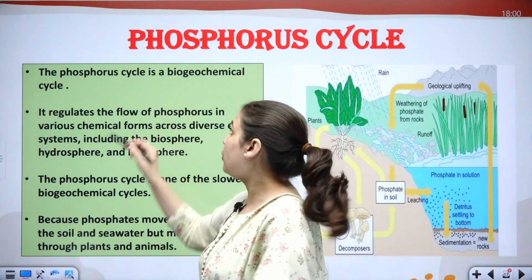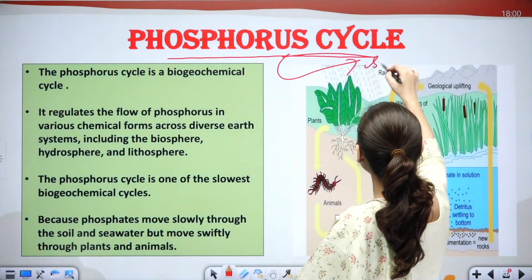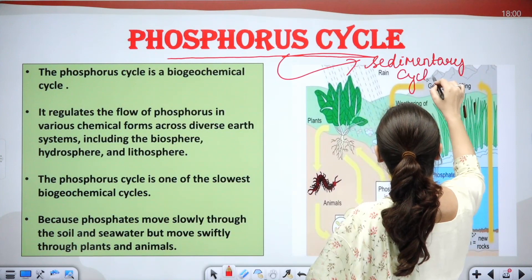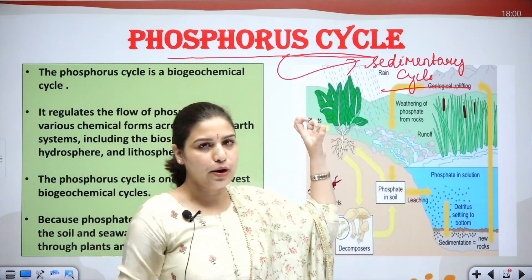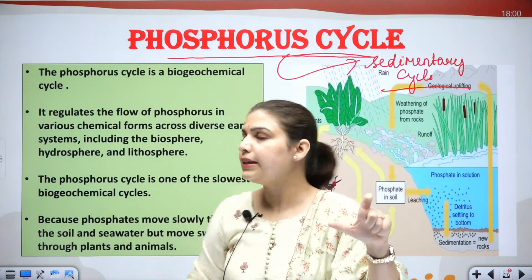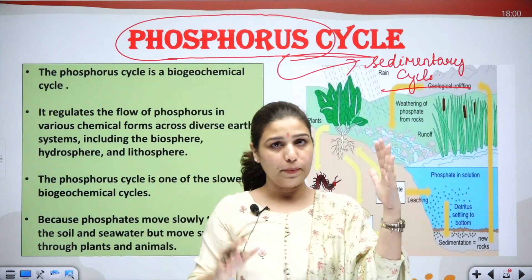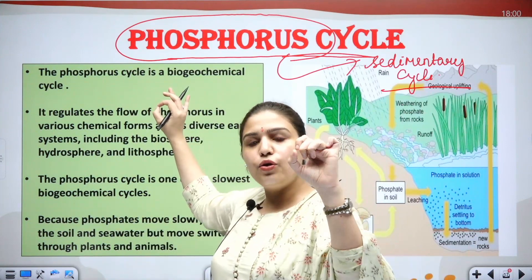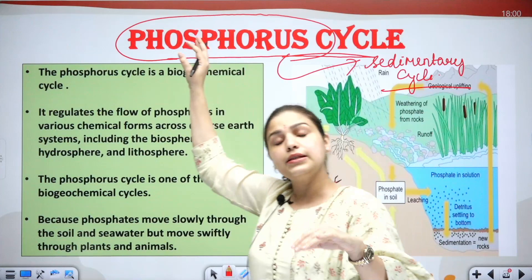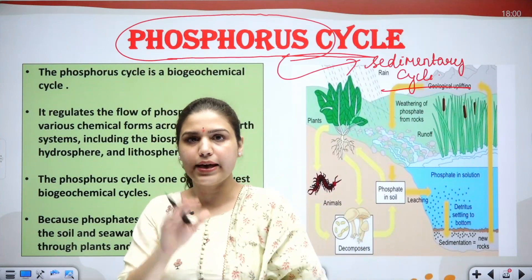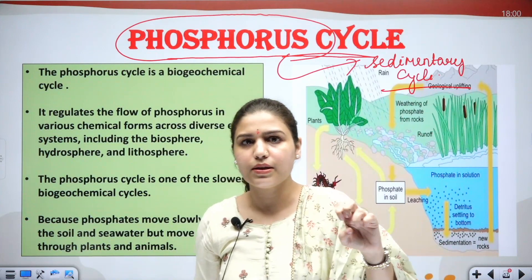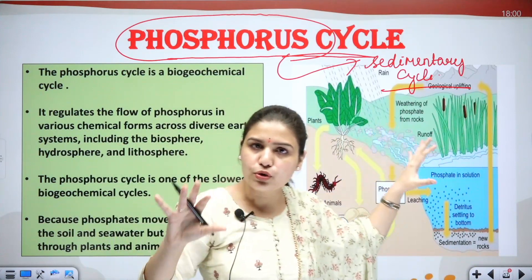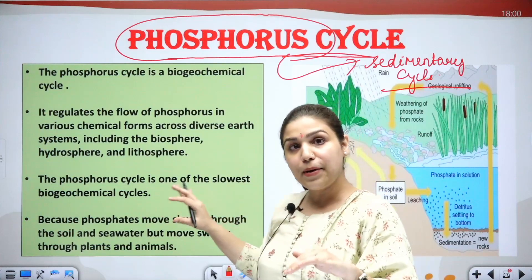Let's begin our lecture on the phosphorus cycle. As I mentioned, this is part of the sedimentary cycle — we have discussed the gaseous cycles which are carbon and nitrogen, so today we discuss phosphorus. It is an important component: it is important for plants for their growth and cell division, helping grow the tip of the plant. For animals, it helps in bone and muscle growth, improving metabolism, and improving milk productivity.